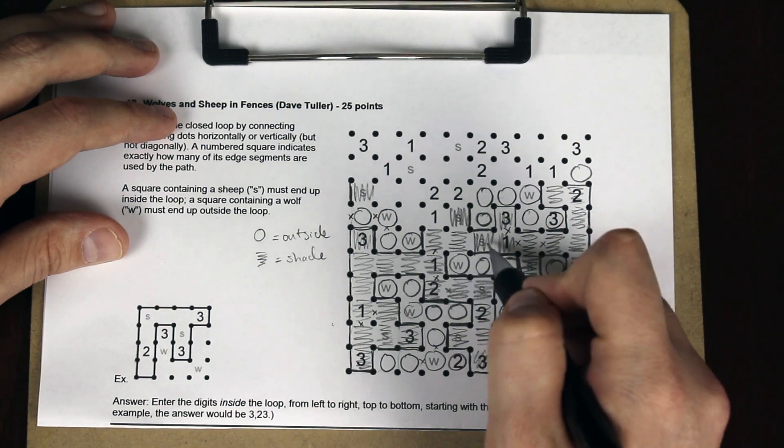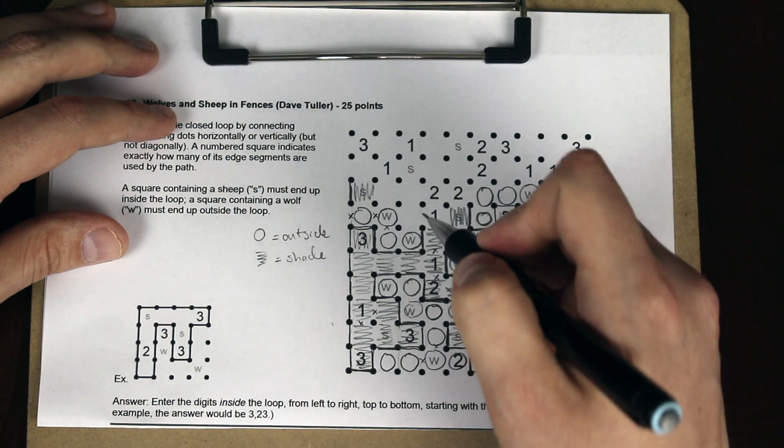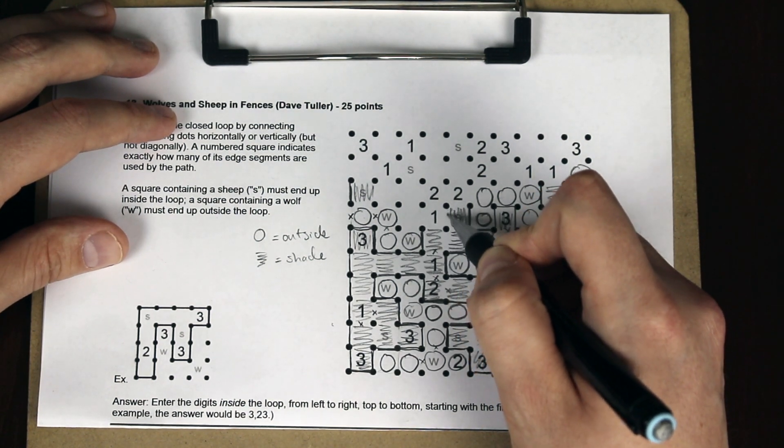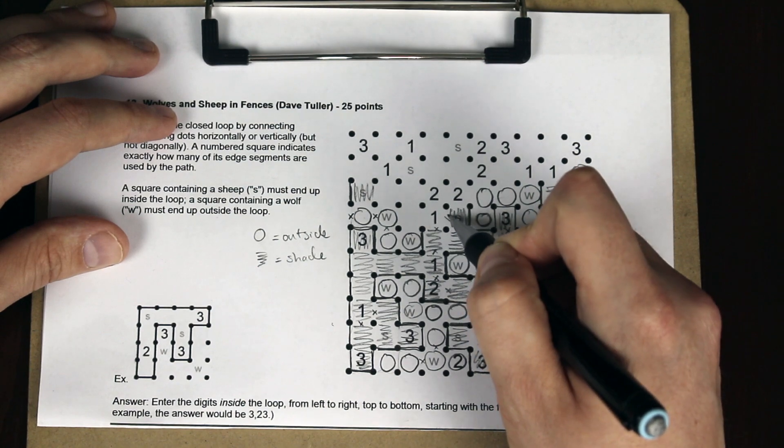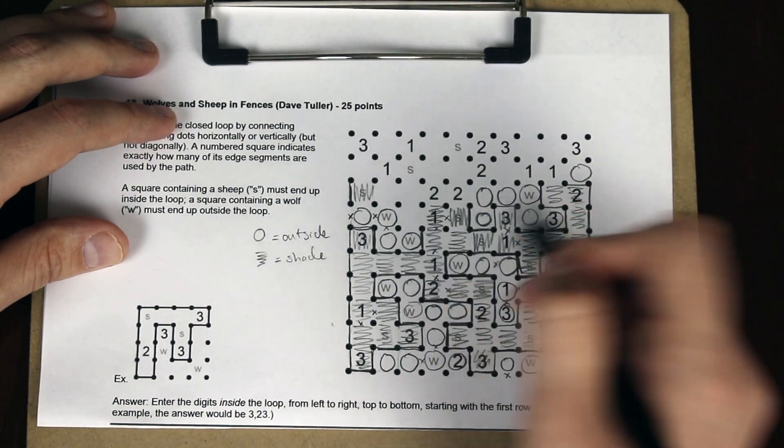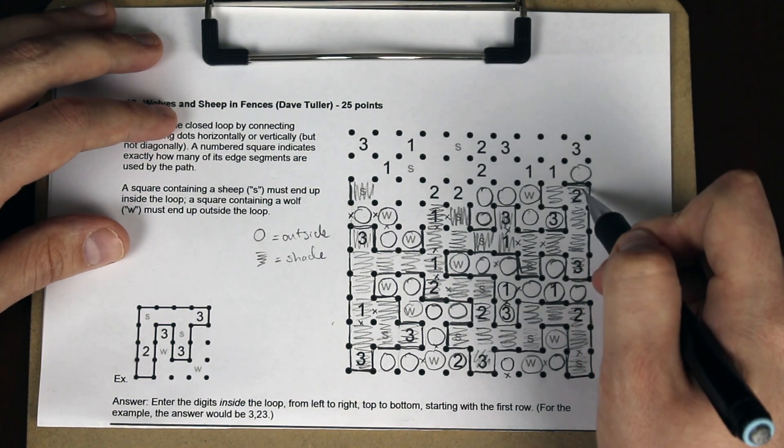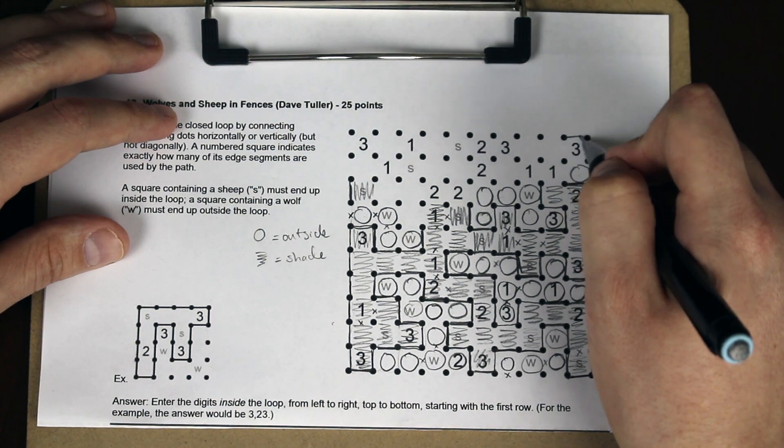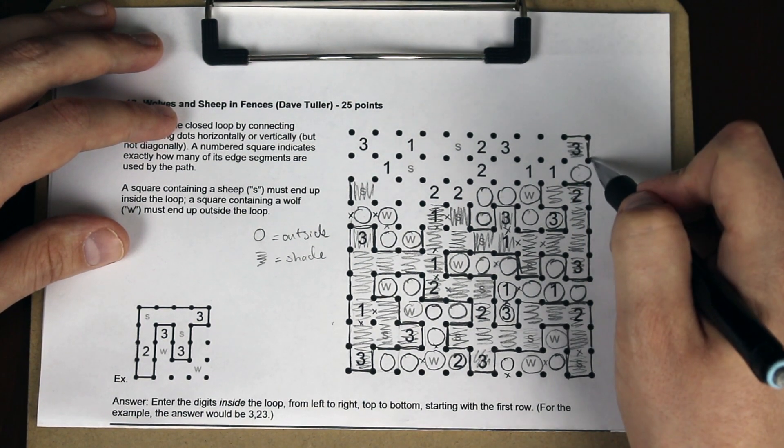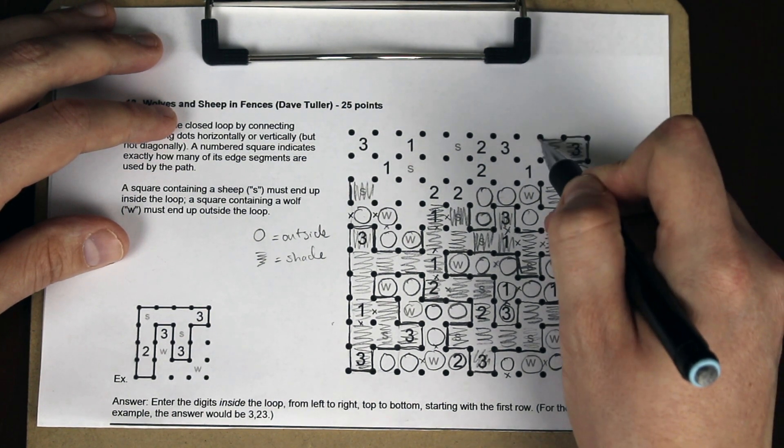This three has to come out like this. This is now outside the loop. This is outside the loop to bring up the checkerboard pattern there. This is inside to bring up the checkerboard pattern here. This one can't go in here because it would have to come back out there. That means those X's are there and this is actually shaded.